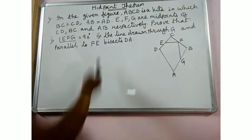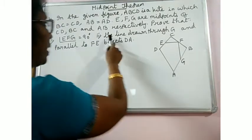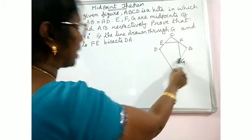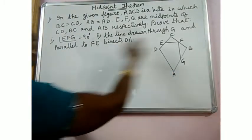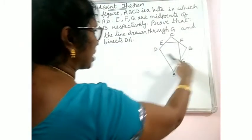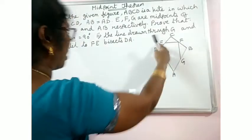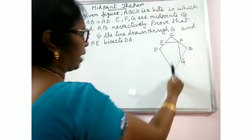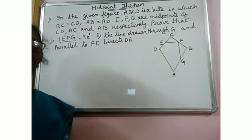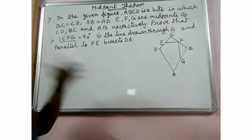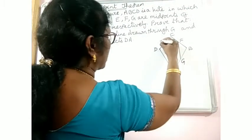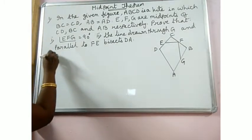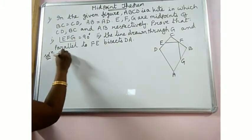The second proof is: we have to prove that the line drawn through G, parallel to FE, bisects DA. So for this we have to construct something. Let me write what is given first, what to prove, then we will construct.